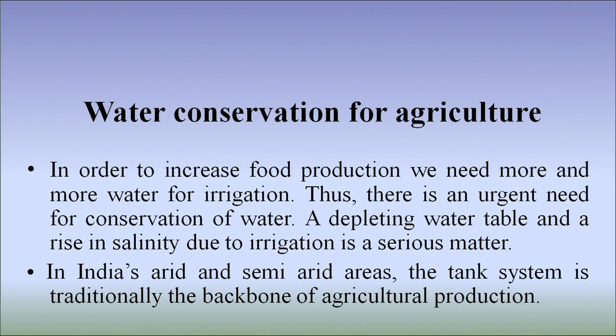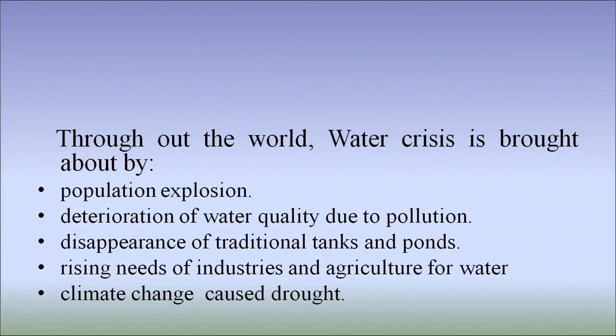Depleting water table and rise in salinity due to irrigation are serious matters. In India's arid and semi-arid areas, the tank system is traditionally the backbone of agricultural production. Throughout the world, water crisis is brought about by population explosion, more per head requirement of water, deterioration of water quality due to pollution, disappearance of traditional tanks and ponds, rising needs of industries and agriculture for water, and climate change which is causing drought-like conditions in many places.